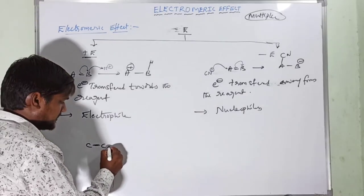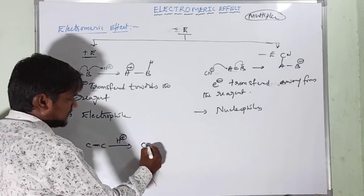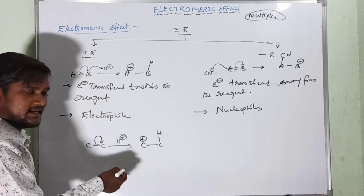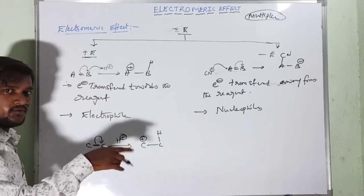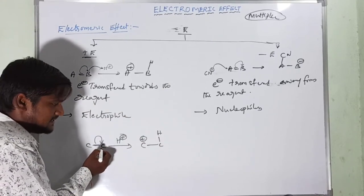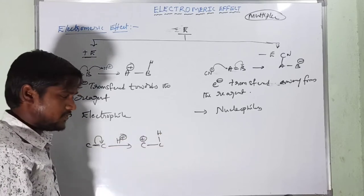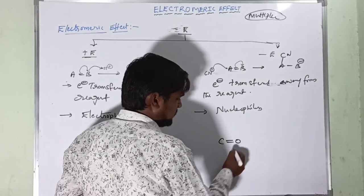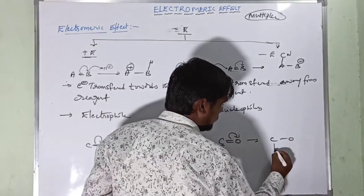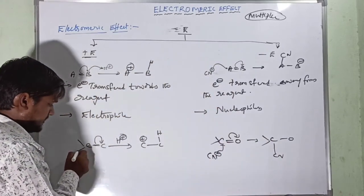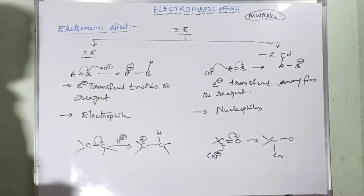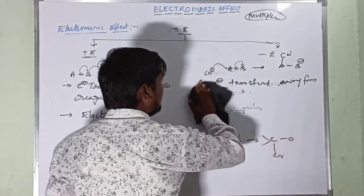For example, in C=C with H⁺ influence, electrons shift and create a C–H bond with a positive charge on the other carbon. In the case of C=O treated with CN⁻, the CN⁻ attacks over carbon, electrons shift, and a new C–O–C bond is formed. These are examples of the +E effect and −E effect.